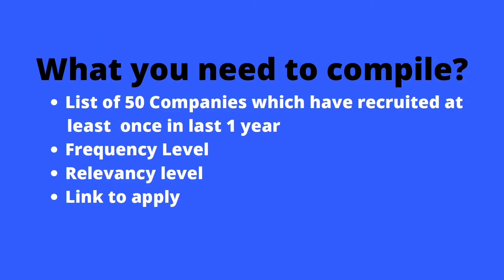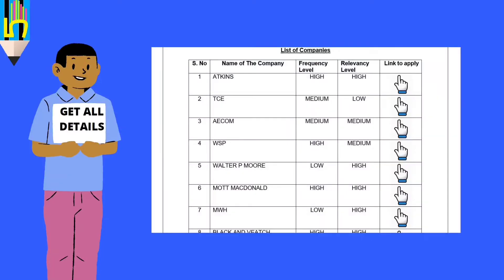The criteria for choosing those companies: they should have recruited at least once in the last year, because if a company is dormant there is no point contacting them. You should also know the frequency — how many times they've recruited in the last year — and the relevancy level, whether they recruit people like us. A small sheet with all relevant details for about 50 companies is available in the description link.